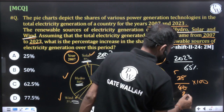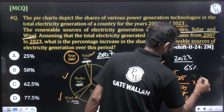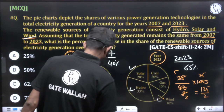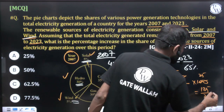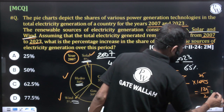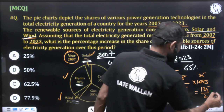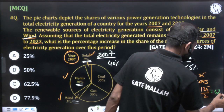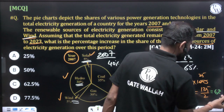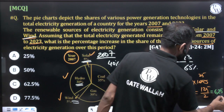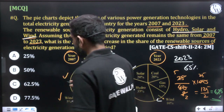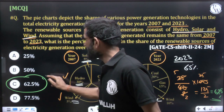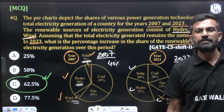Simplifying 25/40 × 100: 25 × 100 = 2500, divided by 40 gives 62.5. So the answer is 62.5% increase from 2007 to 2023 in renewable resources. The answer is option C.